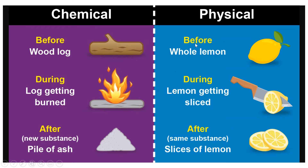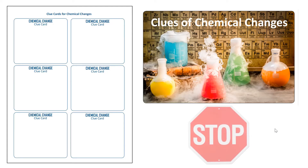Physical would be if I were going to take a lemon and slice it in half — it's still the same substance, just sliced in half. So a physical appearance has changed. Like I said in the intro, make sure you have your clue cards for chemical changes, that you've printed them out and watched or read the mini book Clues for Chemical Changes.